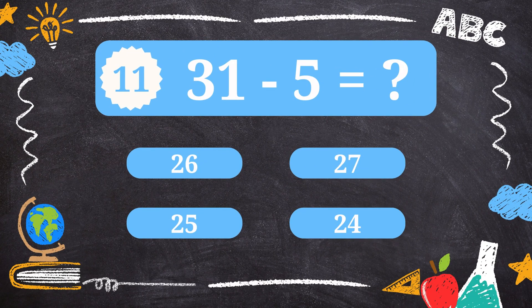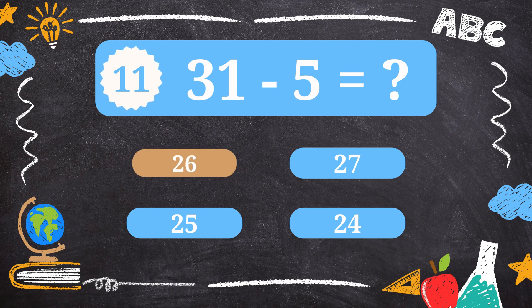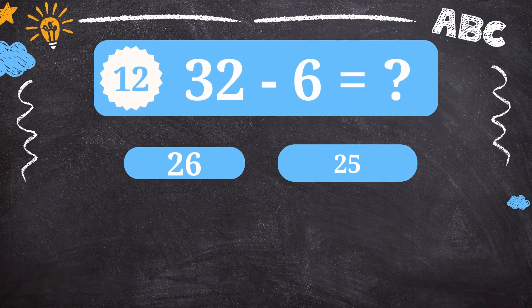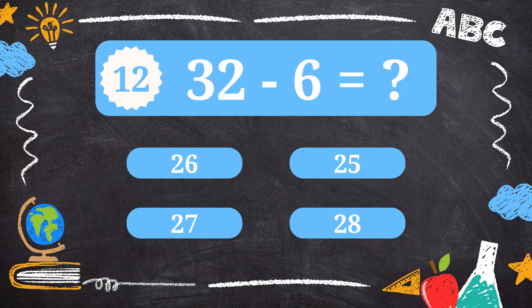Question 11. What is 31 minus 5? 26. Question 12. What is 32 minus 6? 26.